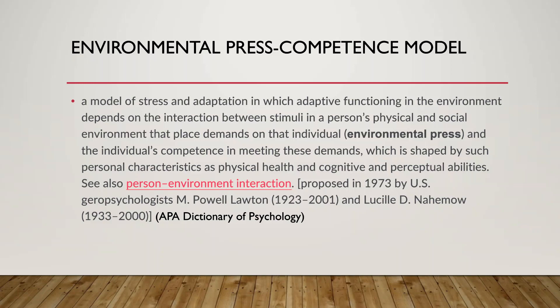The Environmental Press-Competence Model is a model of stress and adaptation in which adaptive functioning depends on the interaction between stimuli in the person's physical and social environment that place demands on the individual — meaning press — and the individual's competence, their abilities in meeting these demands. Competence is shaped by personal characteristics: physical health, cognitive and perceptual ability, and other psychological factors like personality, goals, and interests.